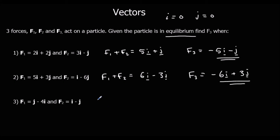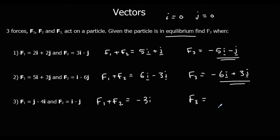Question 3: f1 and f2 add up to minus 3i — the j components are plus 1 minus 1, which is 0. So f1 plus f2 equals minus 3i. To make the overall force zero, we need f3 to be 3i. We don't need any j component because the j's are already equal to zero.